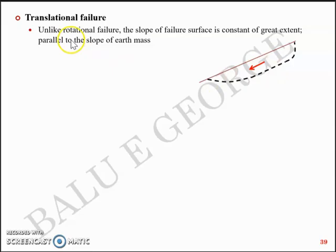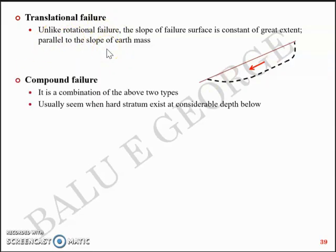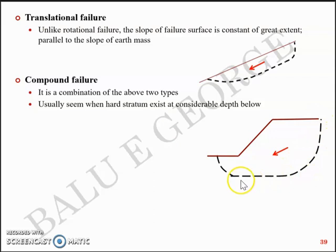The third one is a compound failure, a combination of the above two types. And it's usually seen when the hard stratum exists at considerable depth below. Like this, you have a combination of rotational and translational failure, which is called as a compound failure.